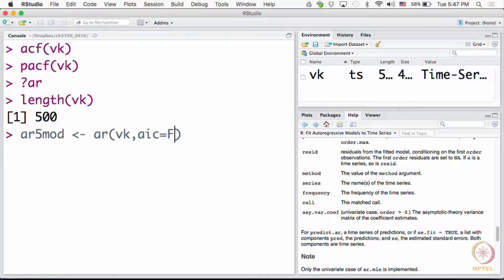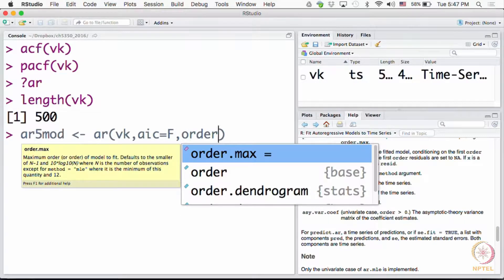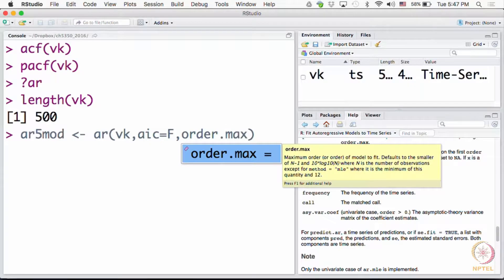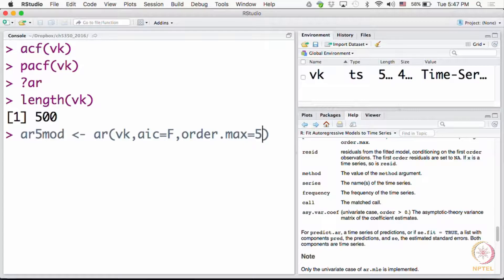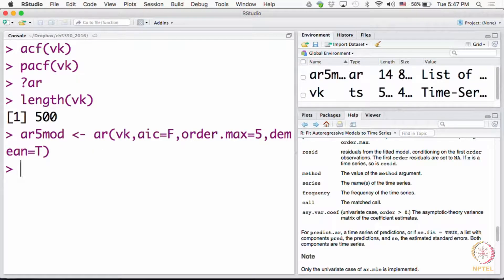What we shall do is specify AIC as false, that means we will freeze the order to our guess because I don't want to pamper you to using AIC all the time, so you make some responsible decisions. Now this routine will fit a fifth order AR, it's not going to do any search for me. And demean by default is set to true.